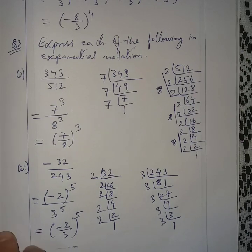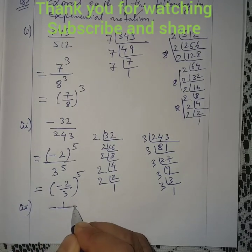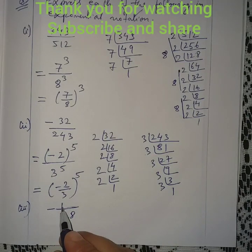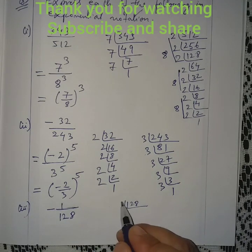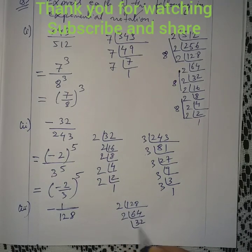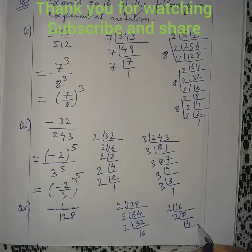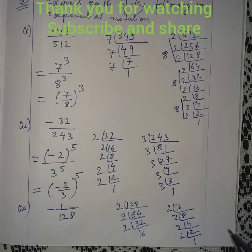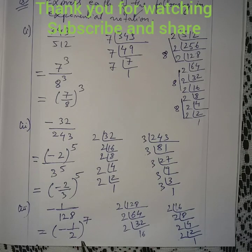Question number 3: Express −1/128 in exponential notation. The numerator is 1, so factorize only 128. Dividing repeatedly by 2: 128 = 2^7 (seven 2s). Since 1^7 = 1, we write −1/128 as (−1/2)^7.